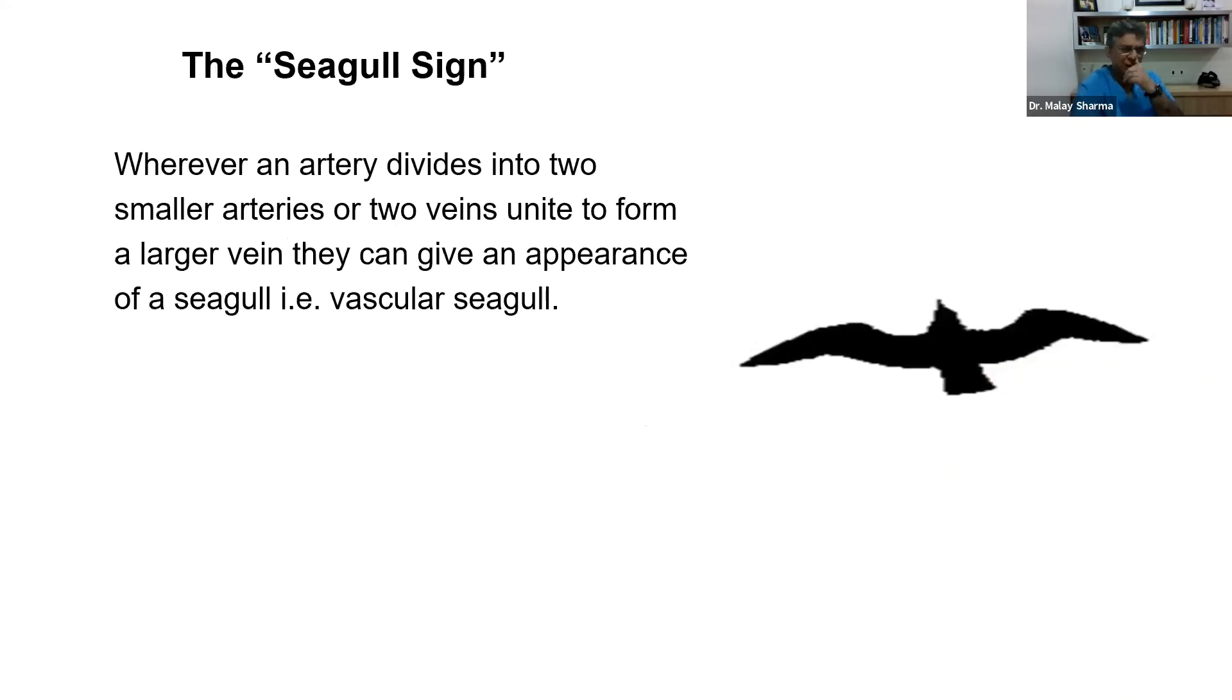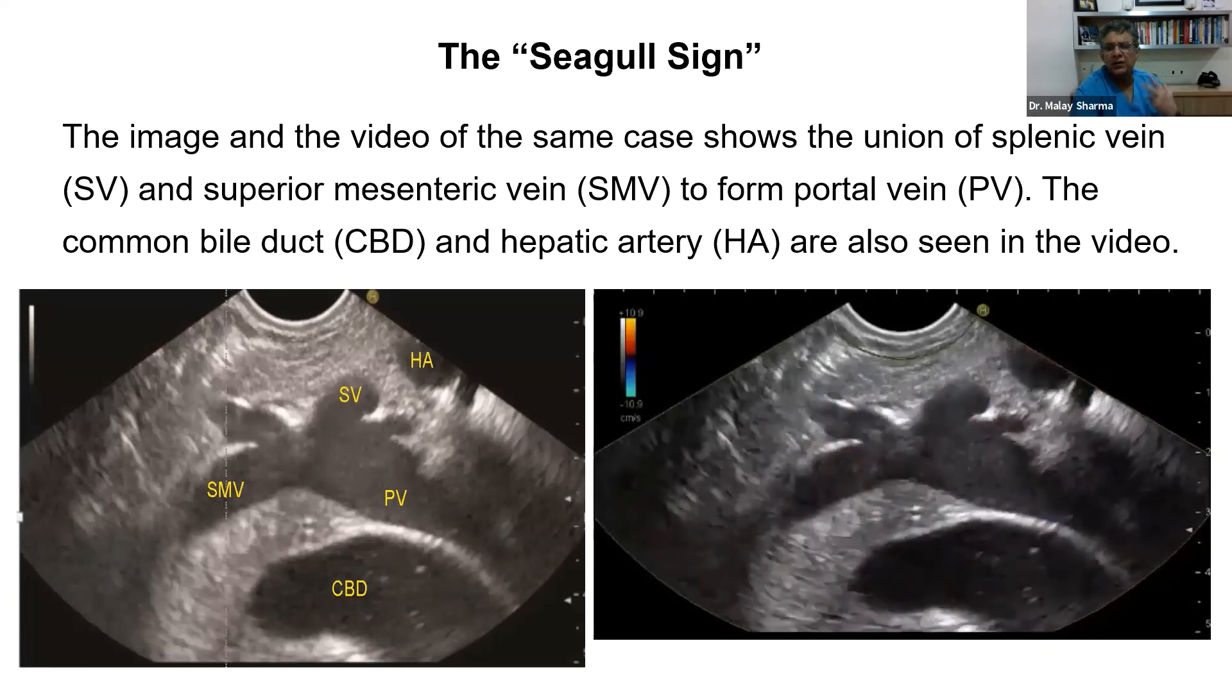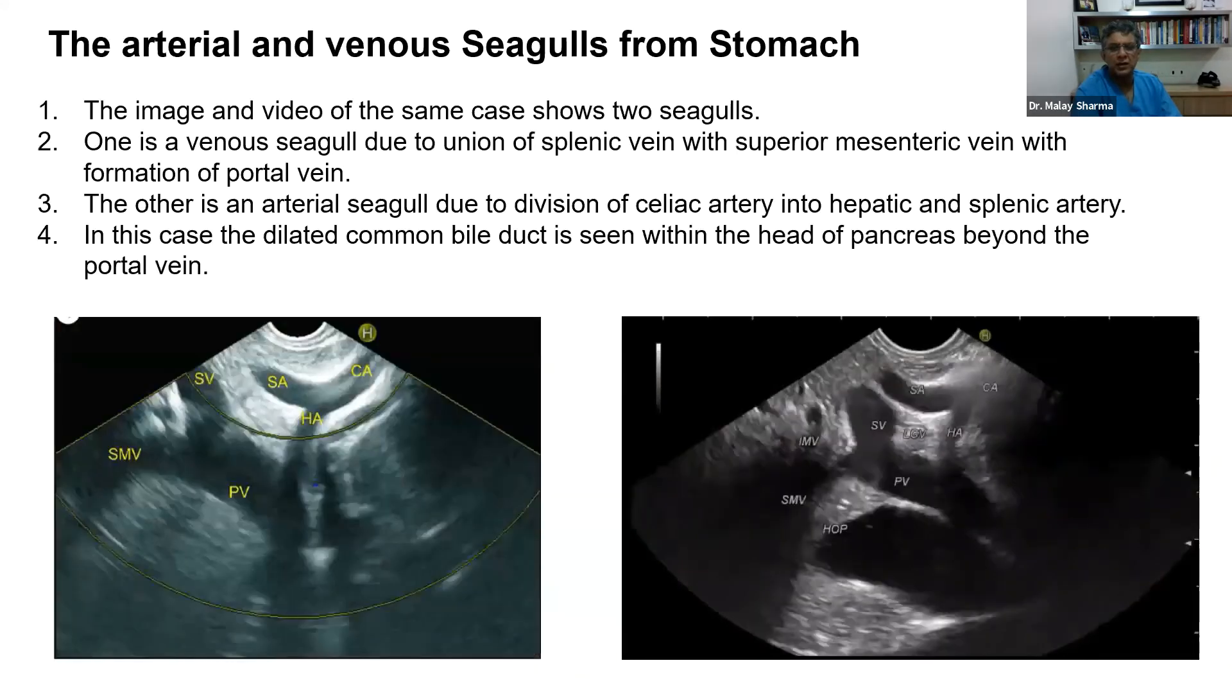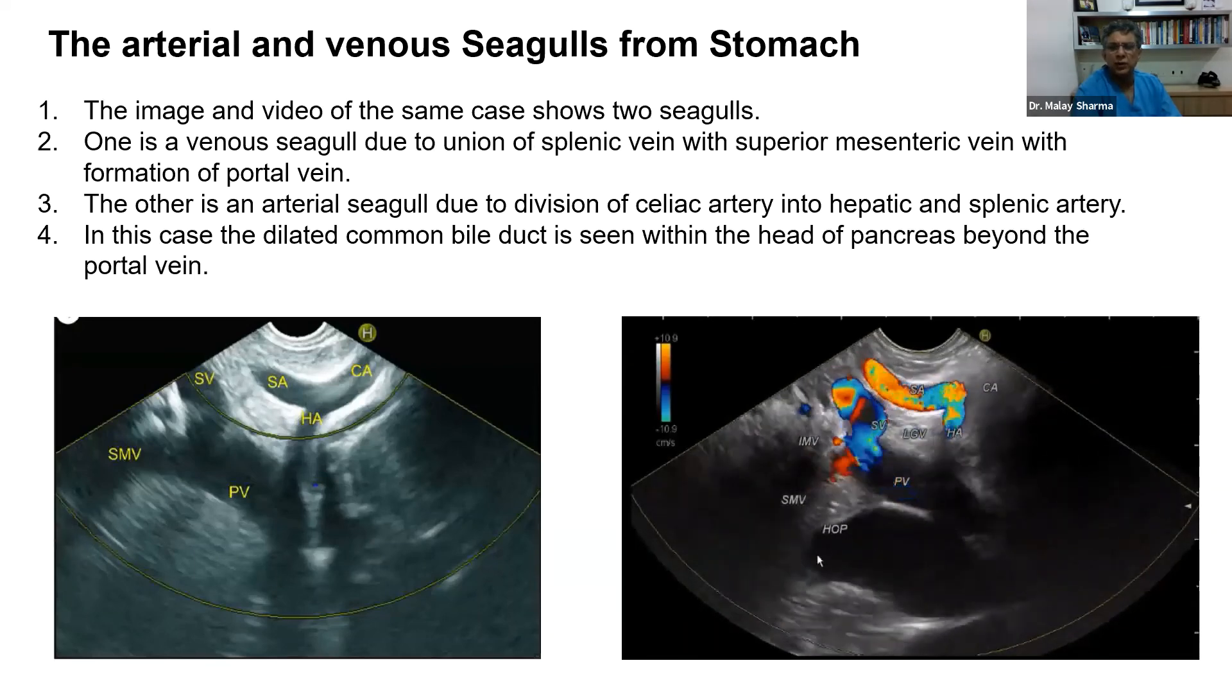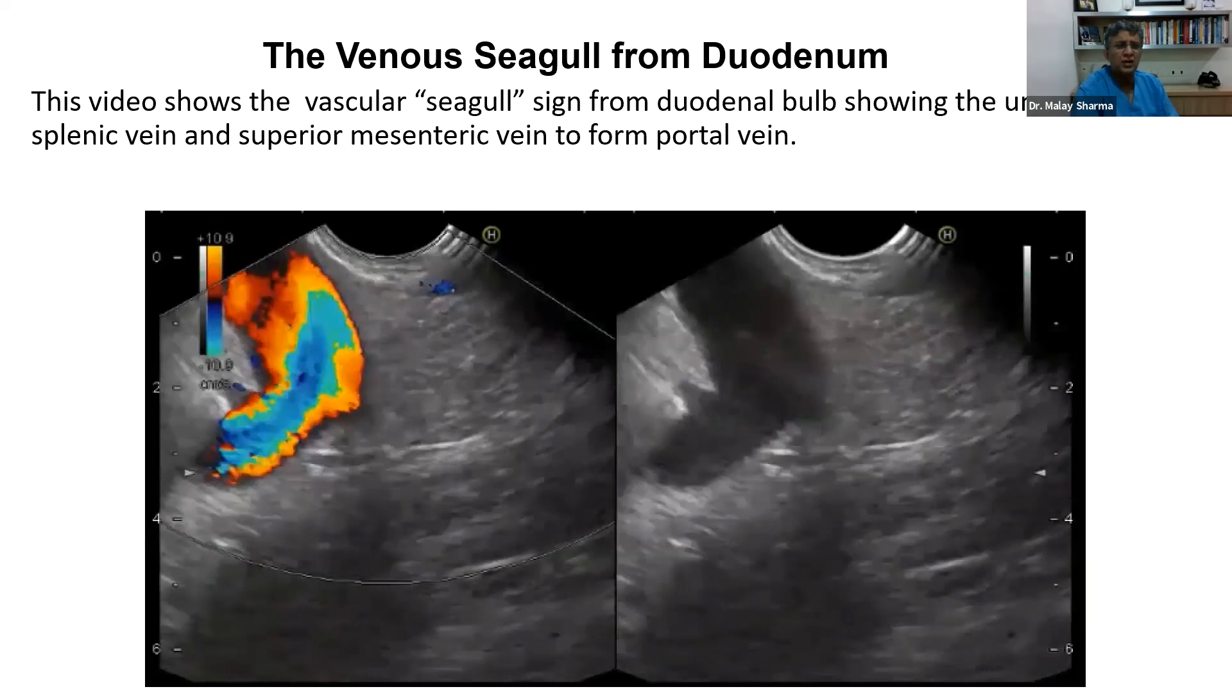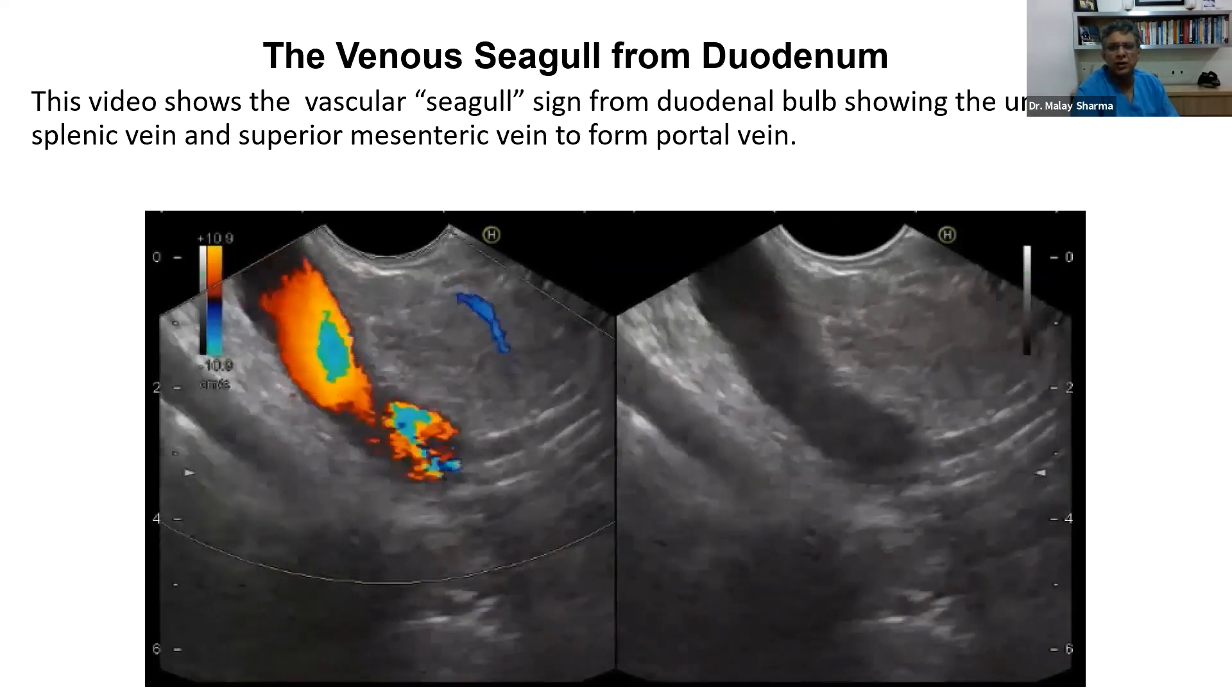Some signs are important. I would like to briefly say that this is a seagull characteristically described for adrenal gland, but the seagull is also formed by the union of veins wherever there are two structures uniting. I would call it a seagull shape appearance by the union of superior mesenteric vein and splenic vein forming a portal venous confluence. In this case, though this is again a vascular seagull, this time this is an arterial seagull showing celiac artery dividing into hepatic artery and splenic artery. These are the vascular seagulls which give you a sign - the common hepatic artery dividing into gastroduodenal artery and hepatic artery proper from the duodenal bulb. And again, the venous seagull or portal venous confluence formed by the union of superior mesenteric vein and splenic vein in the duodenum.